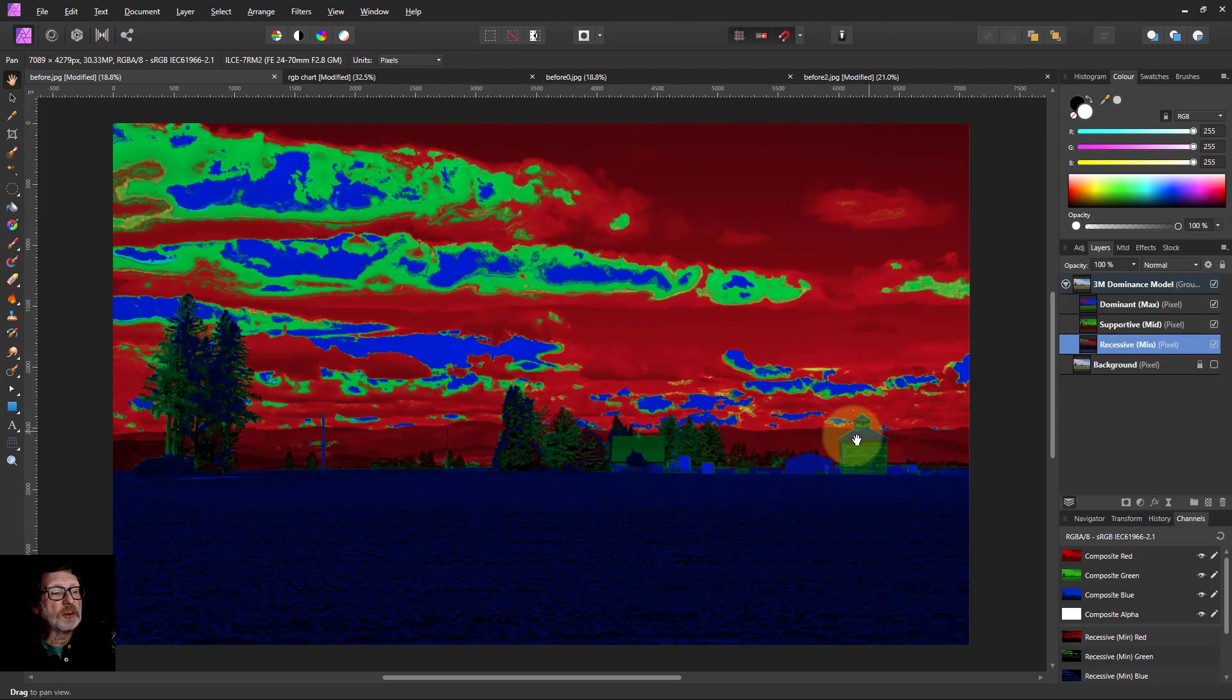And for the minimum one, the recessive one, then blue is the least common in the ground. And you can use this as well for selecting. You just go to the one which selects best.